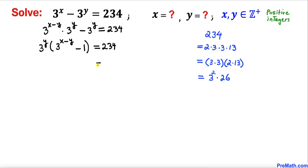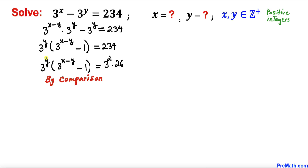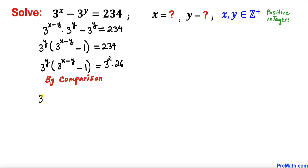So the right-hand side becomes 3^2 times 26, while the left-hand side stays the same. By comparison, we equate 3^y to 3^2, and 3^(x-y) minus 1 to 26. So we write: 3^y equals 3^2, and 3^(x-y) minus 1 equals 26.